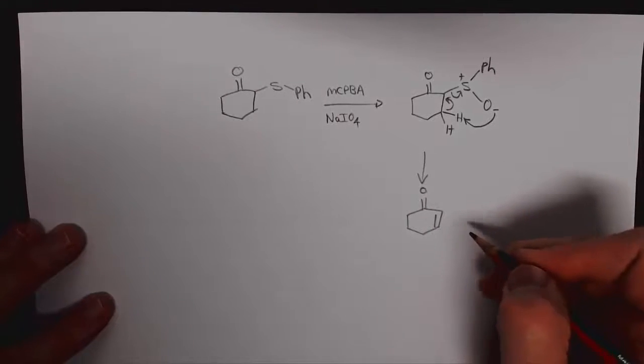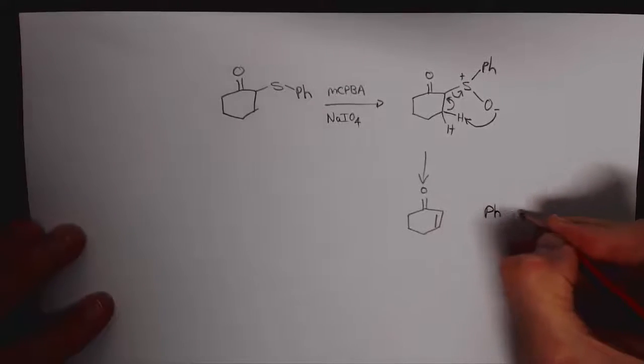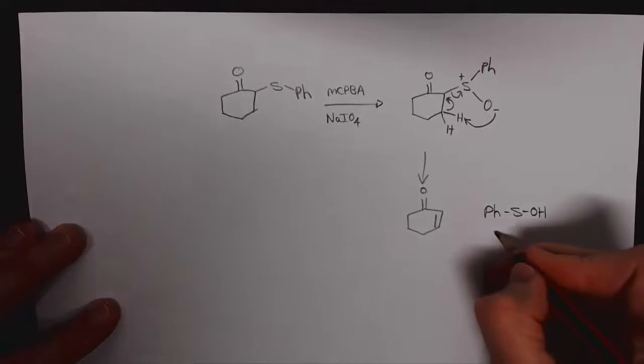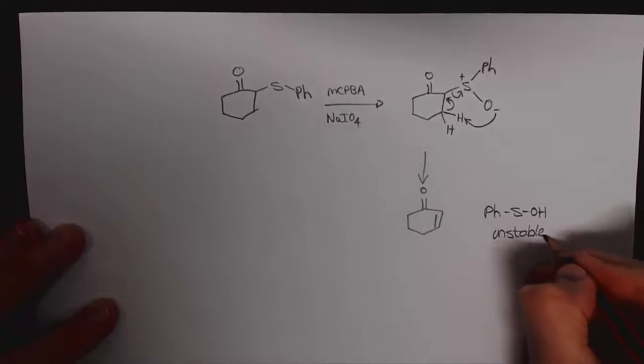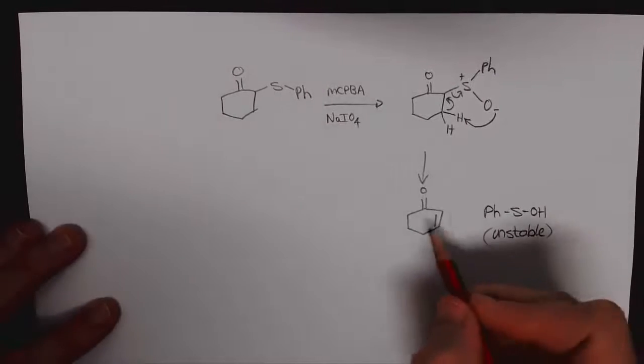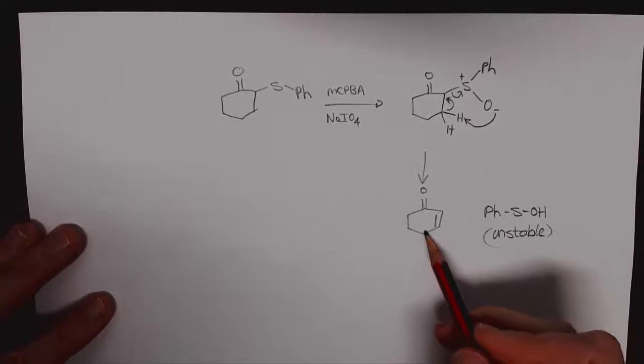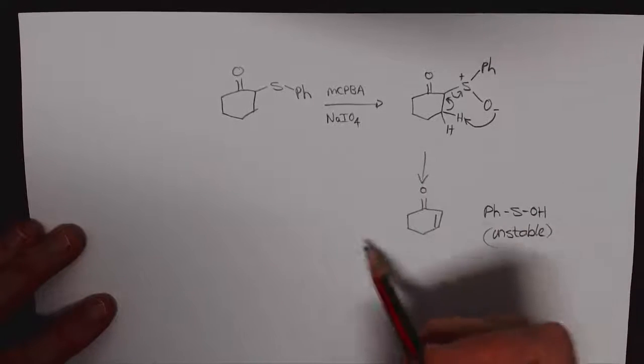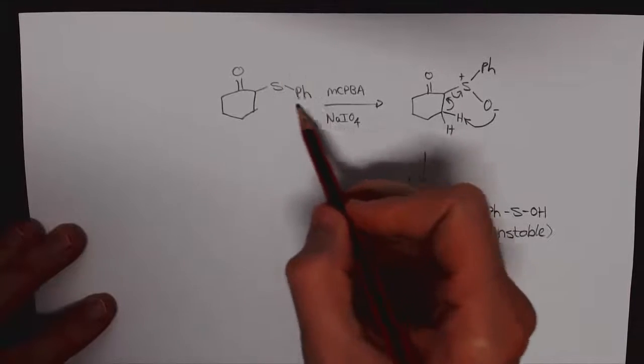The product of that is the alkene, in this case because of our starting material it's the cyclohexenone, the conjugated unsaturated system, and then we also get the phenyl sulfenic acid byproduct but this is very unstable and so it actually just breaks down into volatile compounds and disappears. So this is a good way of introducing double bonds.